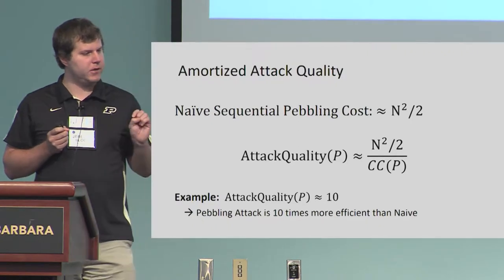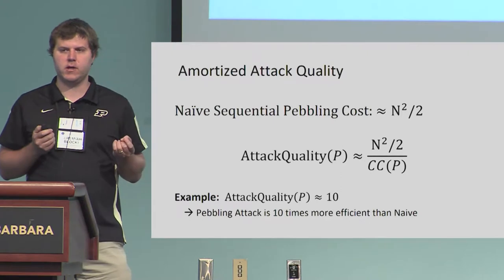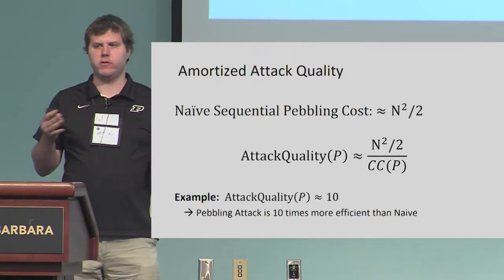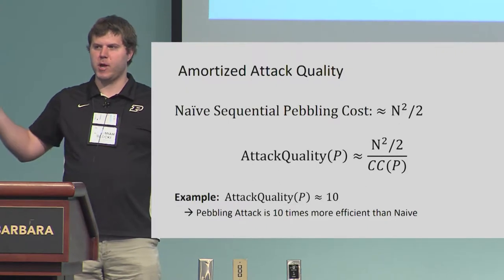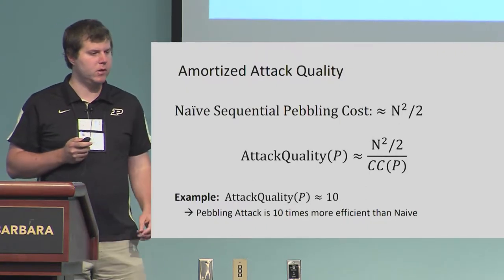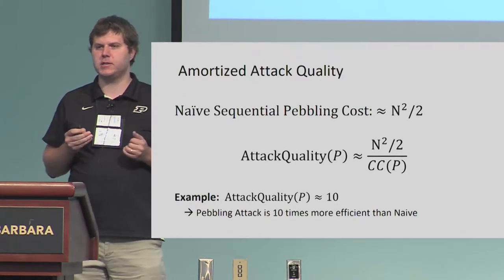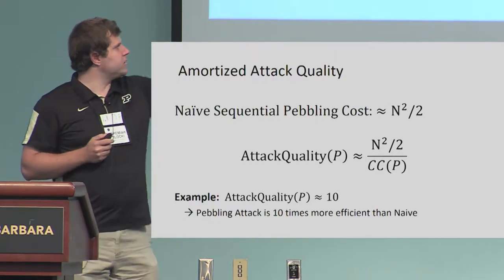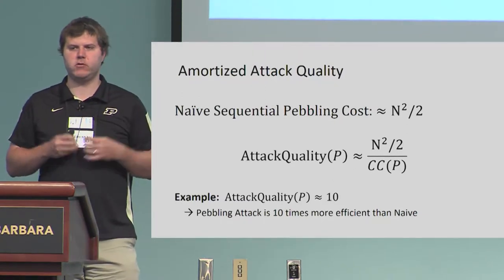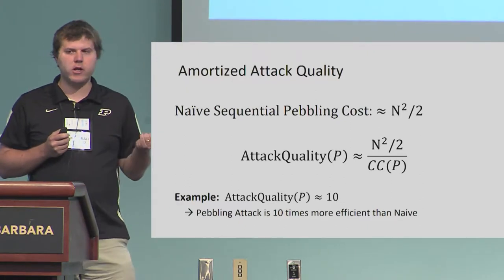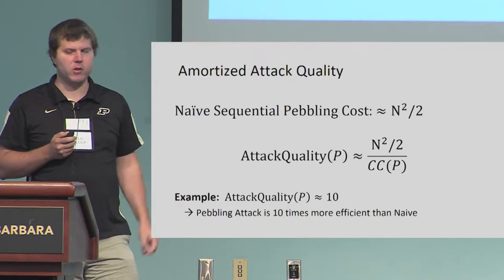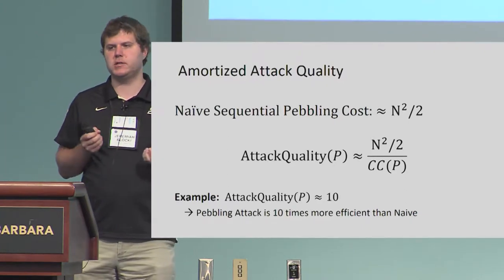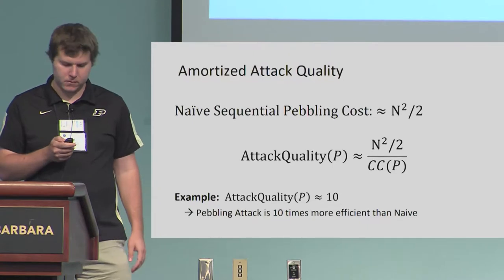We're going to use this notion of attack quality when we evaluate memory-hard functions. The naive sequential pebbling costs roughly n squared over two — pebble node one, pebble node two, keep all pebbles on the graph. Intuitively, we want to ensure that the optimal pebbling the attacker might try is nearly as expensive as this naive strategy. The attack quality measures the attacker's success in reducing his cost: it's the ratio n squared over two divided by the cumulative cost of the pebbling. For example, if we have a pebbling with attack quality 10, this means the attacker reduced his cost by one order of magnitude.